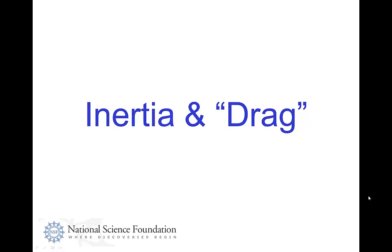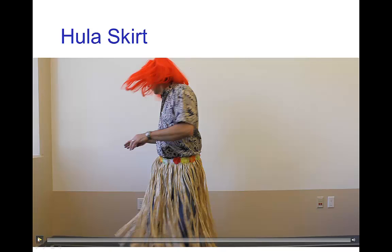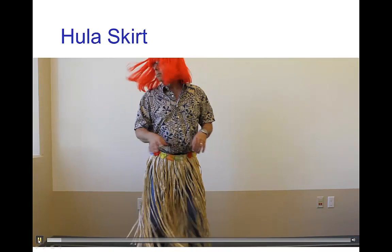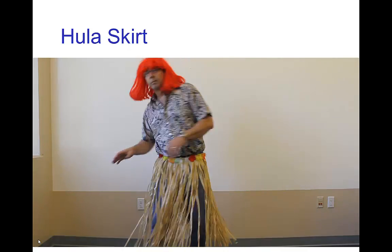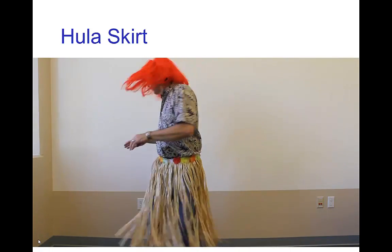Inertia and drag. Animators call drag the effect that you see when something soft like hair or cloth or soft flesh seems to trail behind the rest of the motion. You can picture that in a dancer's skirt or the tail of a horse as it's moving. Here's a little video showing this — you can see the drag in the skirt and in the hair.